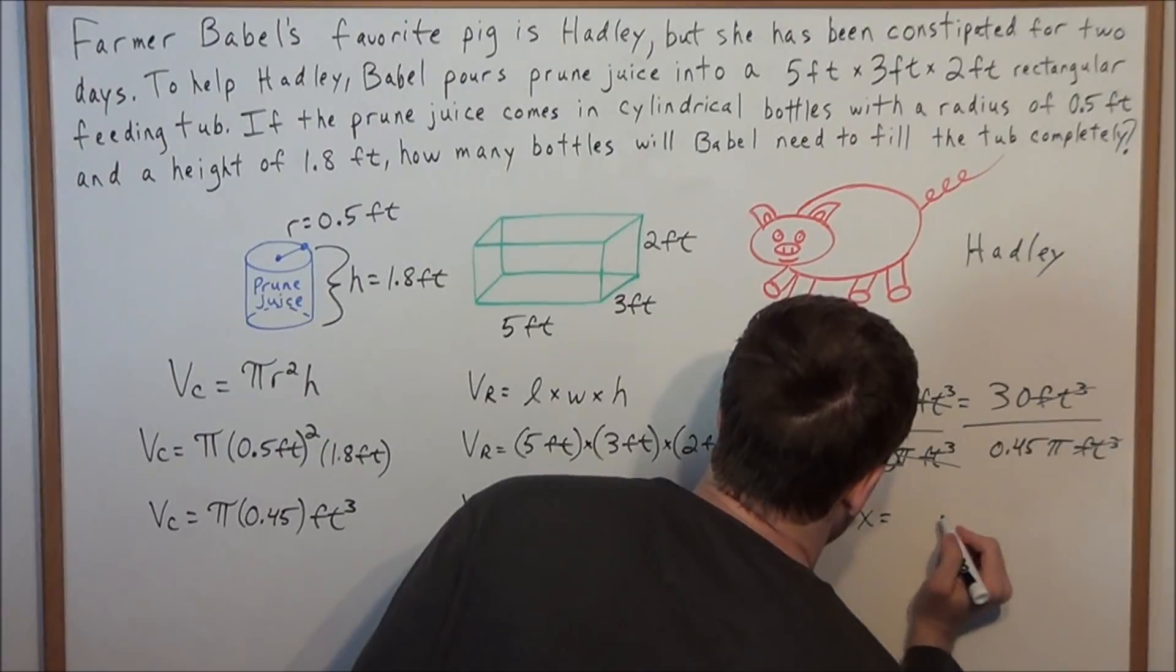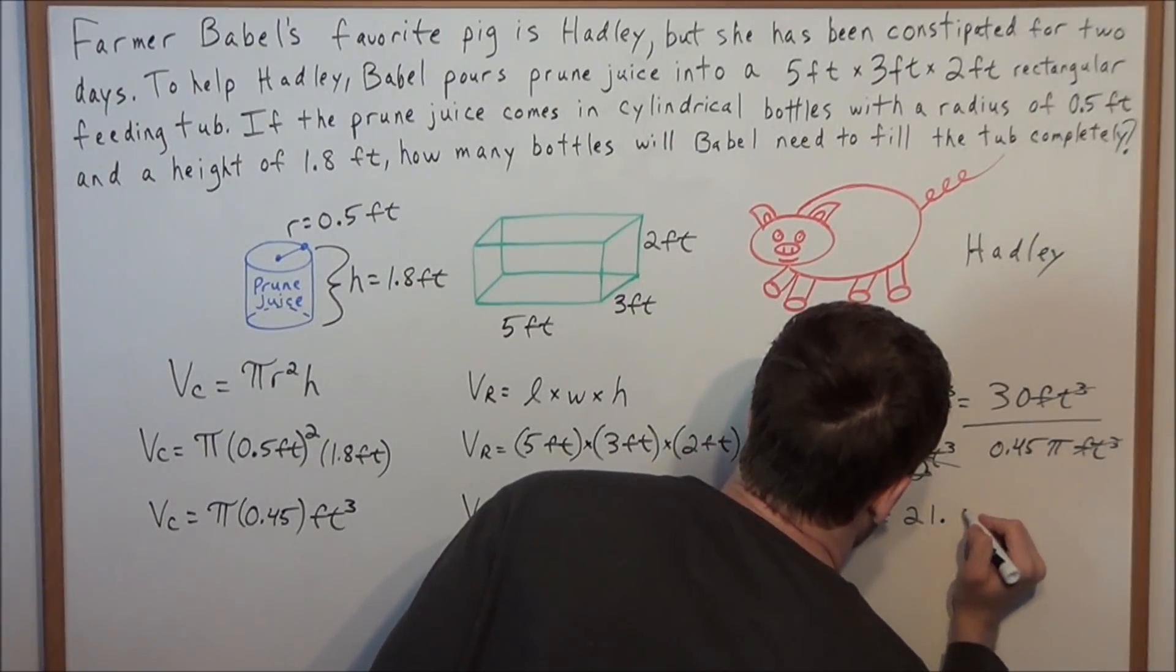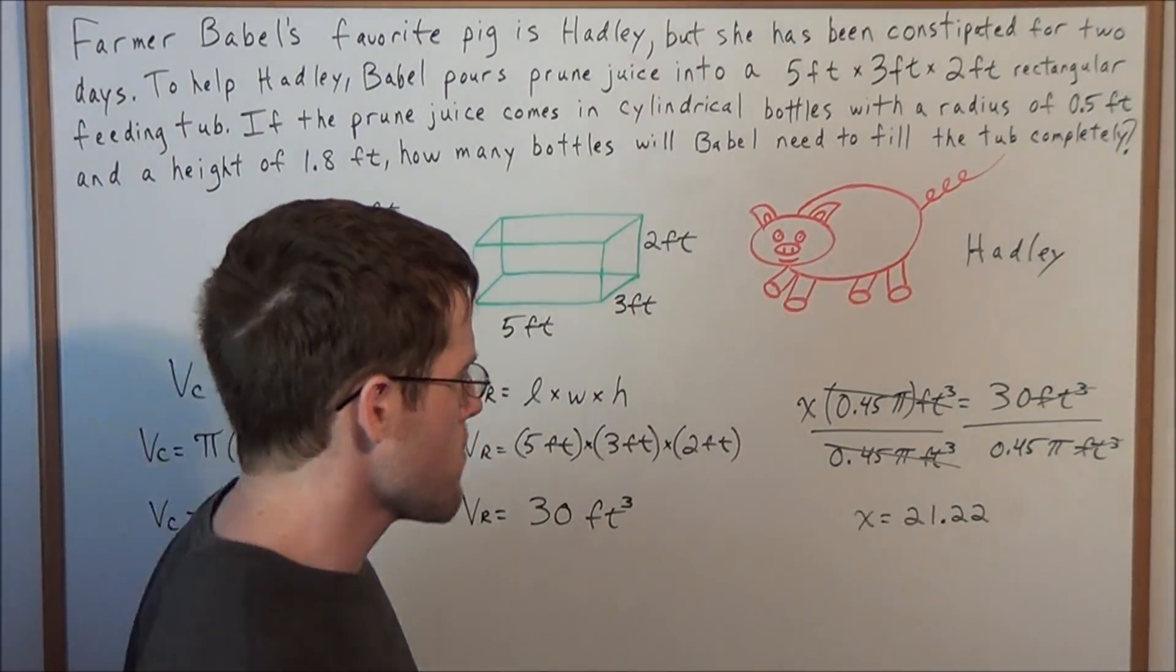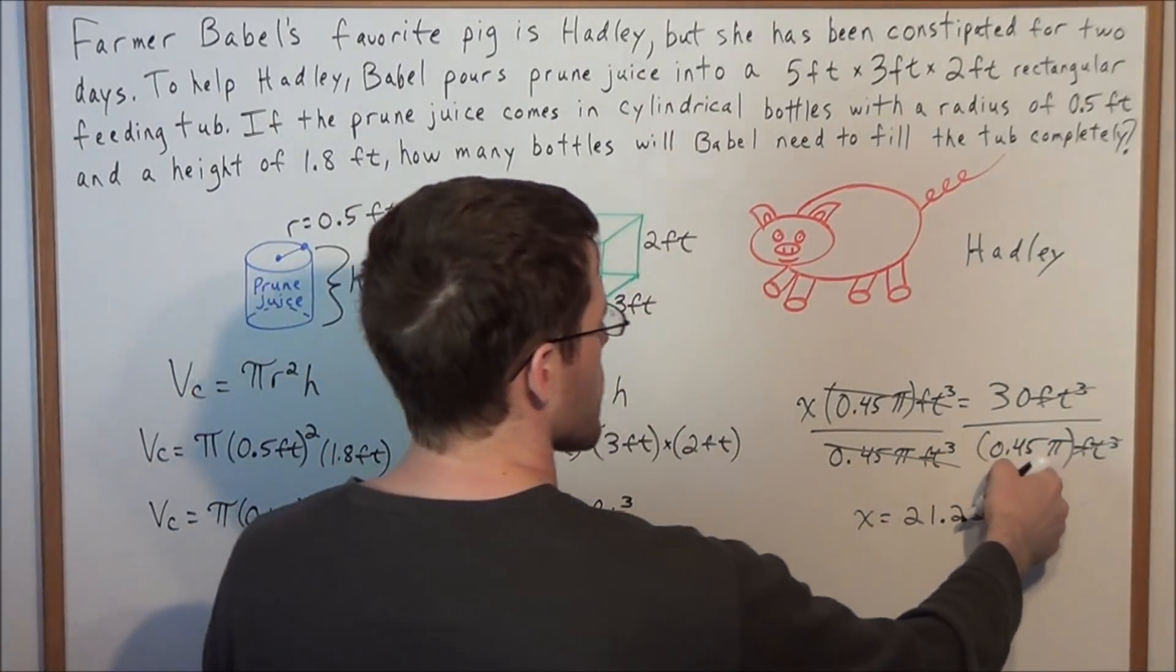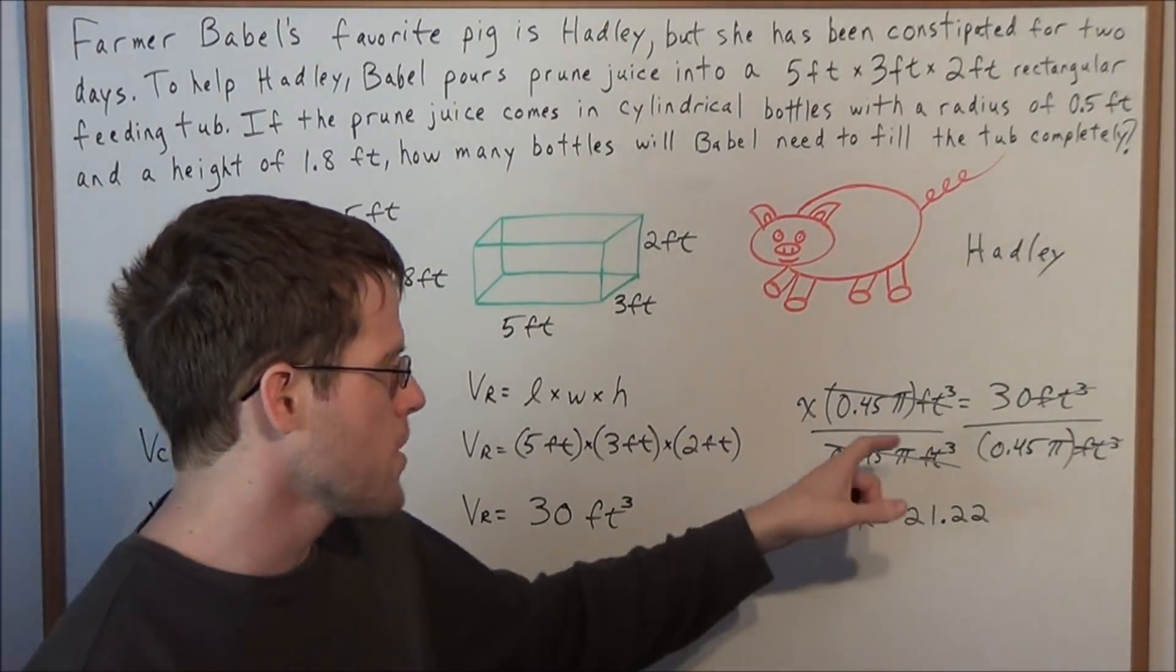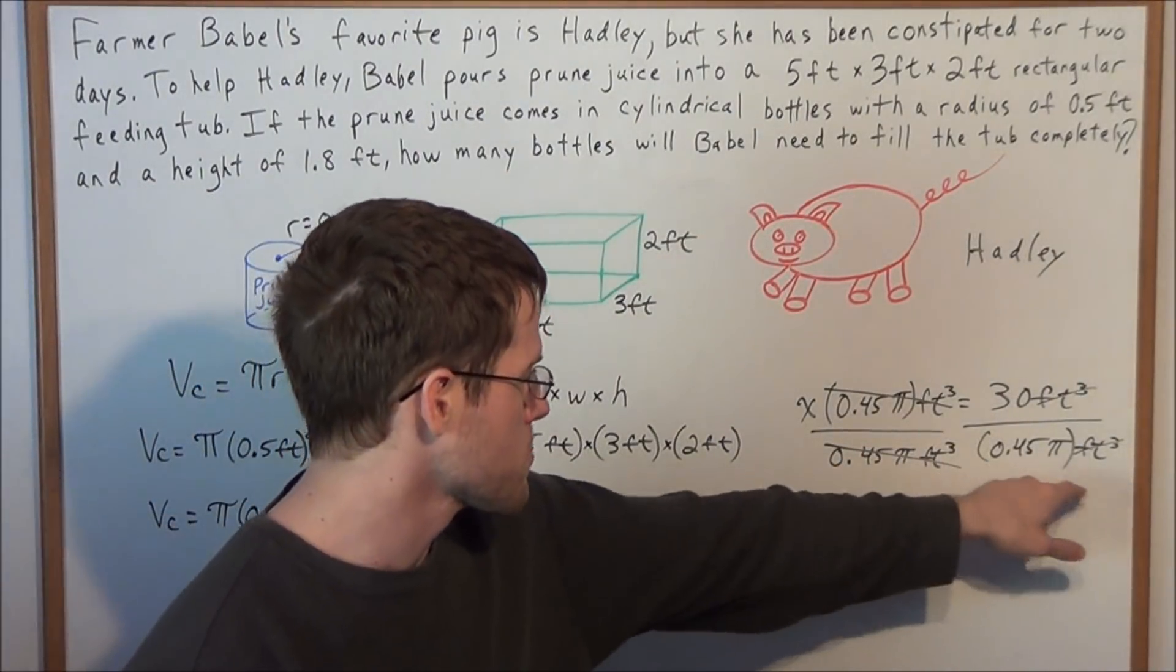So we have x is equal to 21.22. And remember, when you put this in your calculator, I would put parentheses around 0.45 pi, because your calculator will mess it up and give you a different value if you don't put those parentheses.